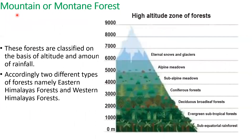The next type is mountain or montane forest. The trees grown in mountain forests differ for every thousand meters of ascent. So based on altitude, the type of vegetation grown on mountains also differs. These forests are classified on the basis of altitude and amount of rainfall. Accordingly, two types — Eastern Himalayan forest and Western Himalayan forest — are found in India.